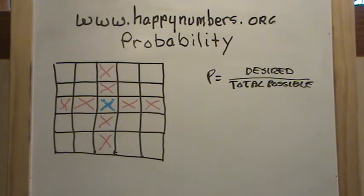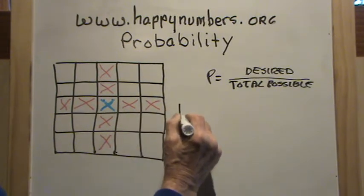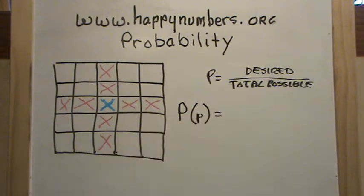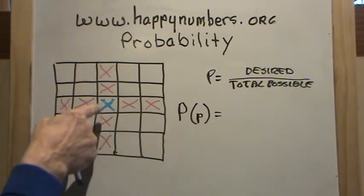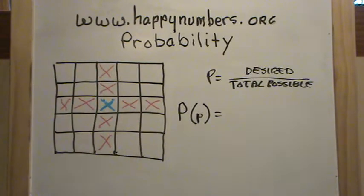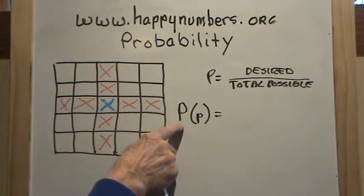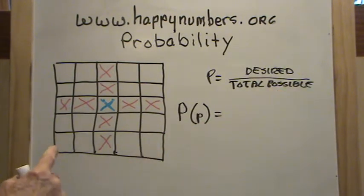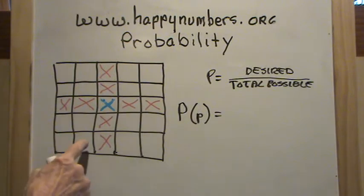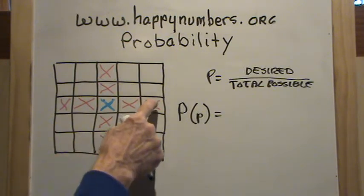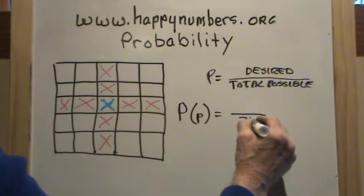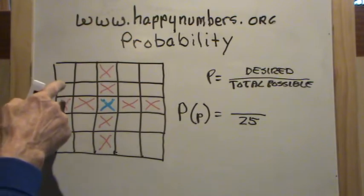What is the probability of getting a prize? Remember, we can land on any of the red ones or the blue one and we'll get a prize — a better prize if we land on the blue, but here we're just looking at the probability of getting any prize. The total possible outcomes: how many total boxes are there? Five times five is 25. So the total possible outcomes is 25. There are 25 boxes, and if we flip our quarter, it could land on any one of those 25.